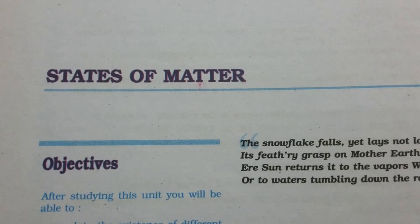Gases are generally collected over water and therefore are moist. Pressure of dry gas can be calculated by subtracting vapor pressure of water from the total pressure of the moist gas, which also contains water vapors. Pressure exerted by saturated water vapor is called aqueous tension. Aqueous tension of water at different temperatures is given in Table 5.3. P(dry gas) = P(total) − aqueous tension.